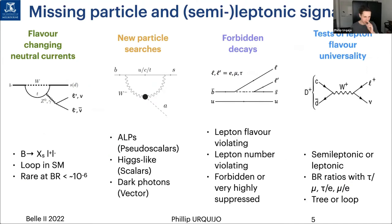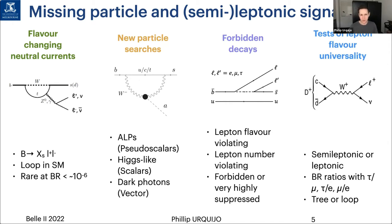The other type of physics we like to do, particularly in B decays, is looking for missing particle leptonic and semi-leptonic signatures. In the first category, we have flavor-changing neutral currents that can give rise to dilepton final states. A second category is associated to feeble interactions and new particles that may disappear — ALPs, Higgs-like scalars, or dark photons. The third is forbidden decays where you break lepton flavor number. The last is leptonic decays and specifically tests of lepton flavor universality.